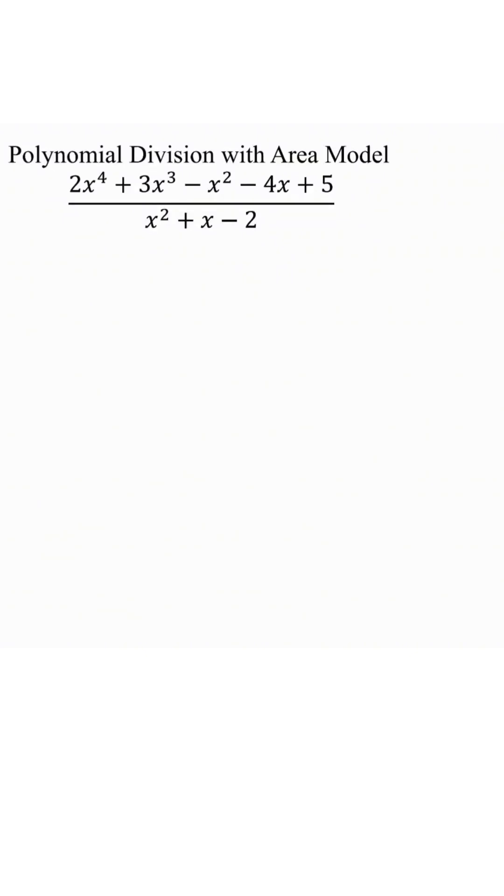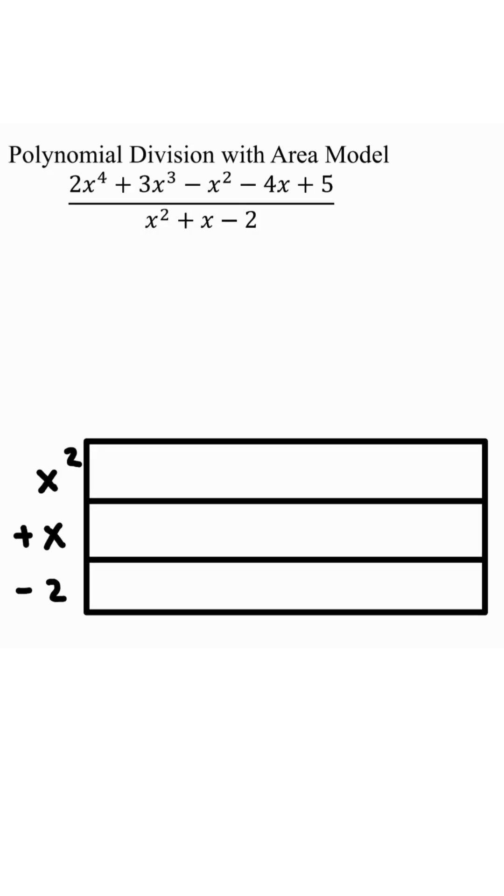Polynomial division with area model. Look at the denominator. We have x squared plus x minus 2, which is three terms, so we're going to write the three terms this way, and we're going to make a box with three rows.